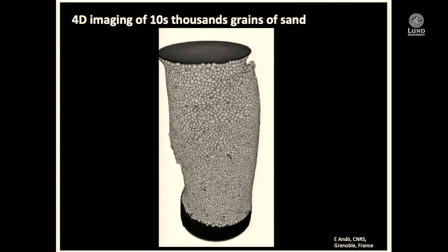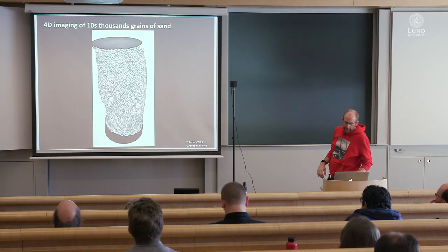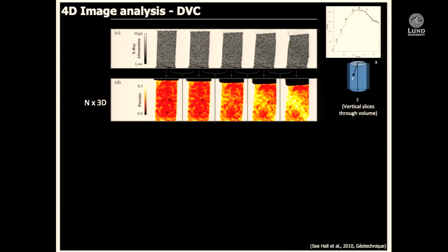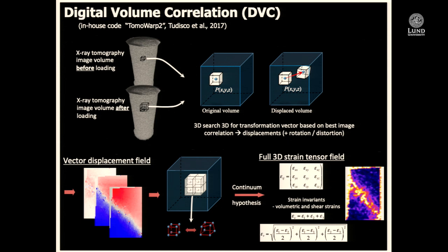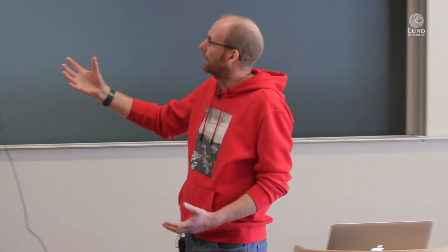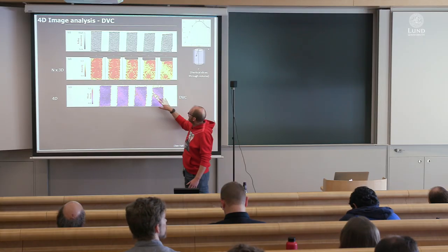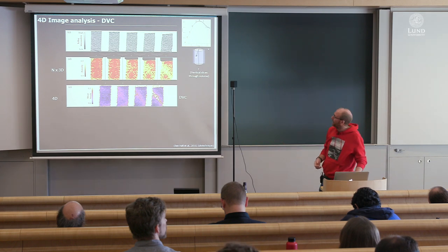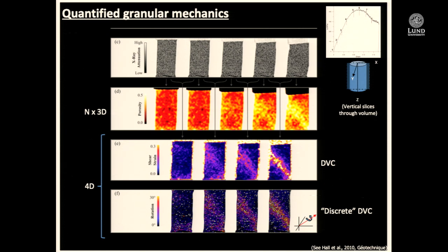From the 4D sand experiment, one can see how the material evolves and understand mechanisms leading to localization of deformation and sample failure. Analysis procedures developed over many years include n-times-3D porosity analysis and digital image correlation (DIC), which tracks different parts of the 3D image to get displacement and strain fields in three dimensions. Individual grain rotations can even be observed. They now want to do the same for fibers and other materials.